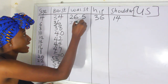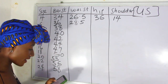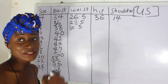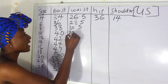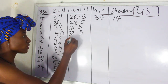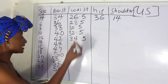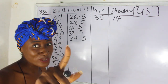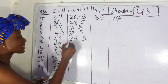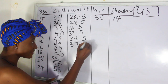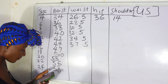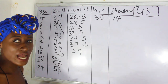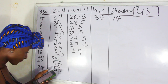The waist measurement for size 4 is 26.5 inches, size 6 is 28.5 inches, size 8 is 30.5 inches, size 10 is 32.5 inches, size 12 is 34.5 inches — we're adding 2 inches each time. Then size 14 jumps to 37.5 inches, and size 16 is 39 inches.